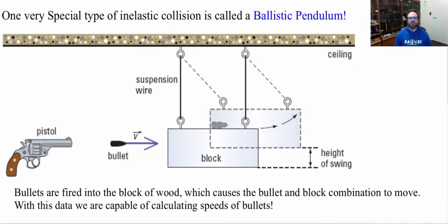So have you ever tried to figure out how they figure out what is exactly the speed of a bullet coming from a gun and how they determine how fast bullets come from certain guns? Well, here's an interesting way of doing so. It is a very special type of inelastic collision called a ballistic pendulum.